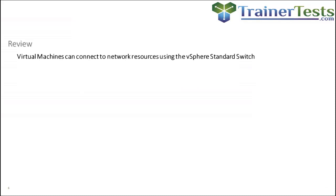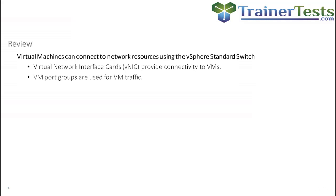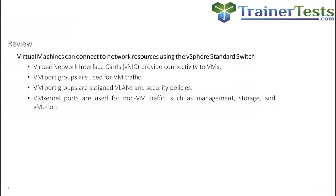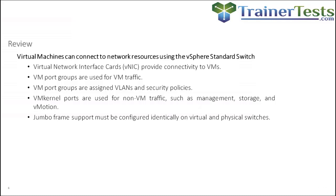In review: in this lesson we learned that virtual machines can connect to network resources using a vSphere standard switch, and that our virtual NIC (vNIC) essentially tricks the guest operating system into thinking it has a true physical network interface card. Virtual machine port groups are used to connect our virtual machines and carry only VM traffic. Our virtual machine port groups are assigned VLANs and can also have security policies. All other types of traffic — like management, storage, and vMotion — flow over VMkernel ports. Jumbo frame support needs to be configured identically on virtual switches and physical switches, otherwise we end up with fragmentation and reassembly.